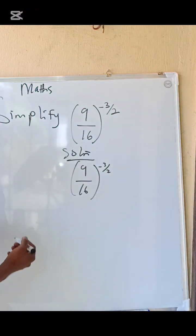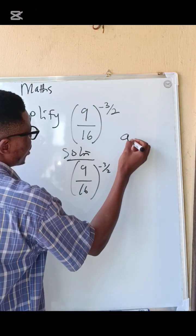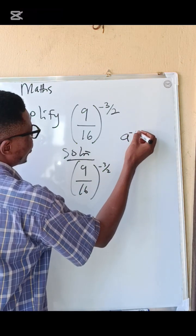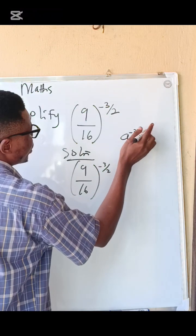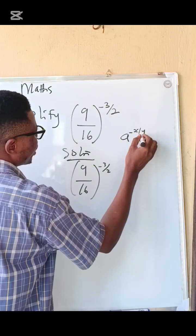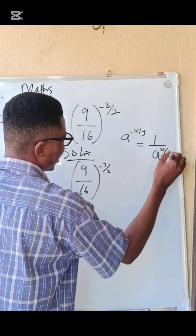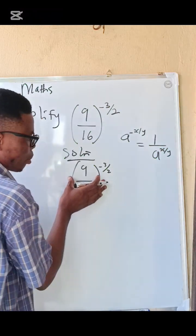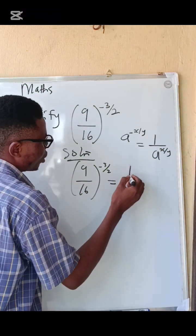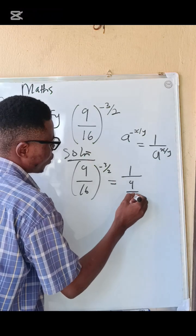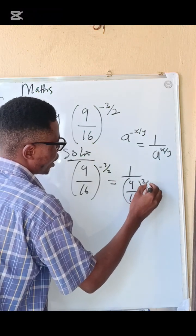We can apply the negative law of indices: if you have a raised to the power of minus x over y, it can be written as 1 over a to the power x over y. Applying that here, we get 1 over 9 over 16, all raised to the power of 3 over 2.